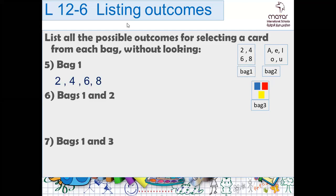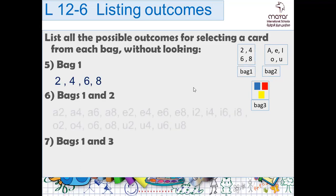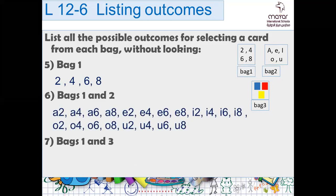In bag one and two, in order not to forget anyone, take every outcome alone: two A, two E, two I, two O, two U — then four A, four E, four I, four O, four U — then six A, six E, six I, six O, six U — then eight A, eight E, eight I, eight O, eight U.